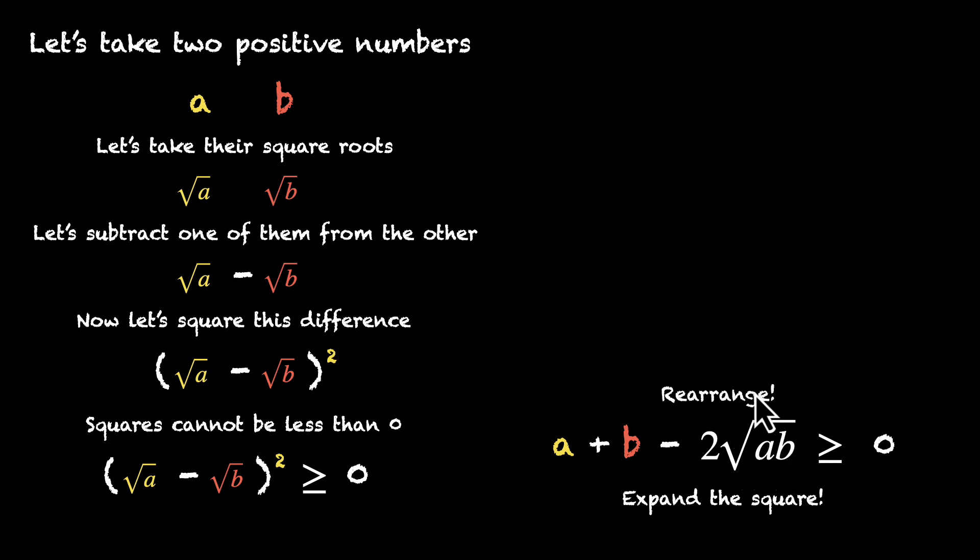Let's rearrange. We have a + b ≥ 2√ab. Now let's divide both sides by 2. 2 is a positive number, we can do that. So (a + b)/2 is greater than or equal to √ab.